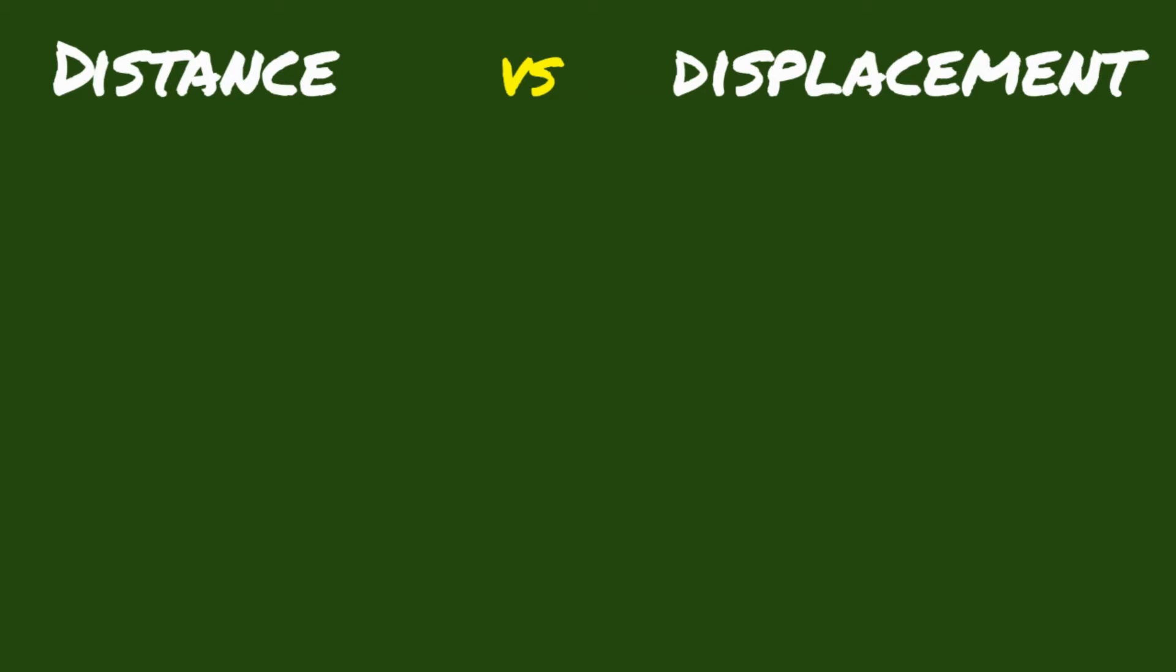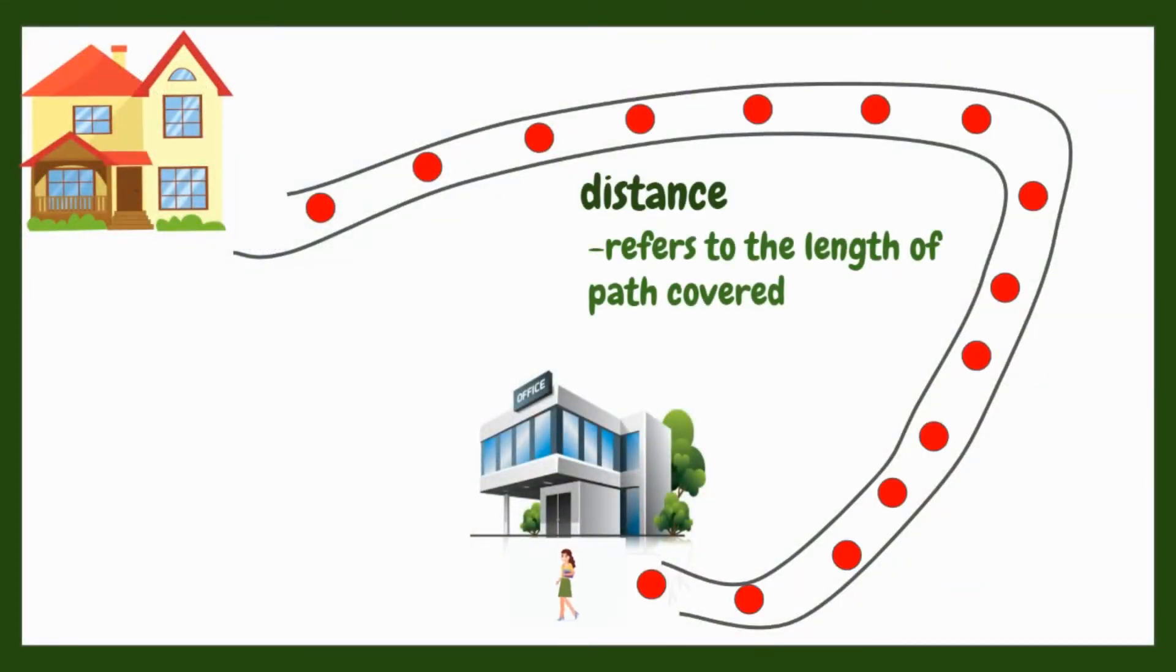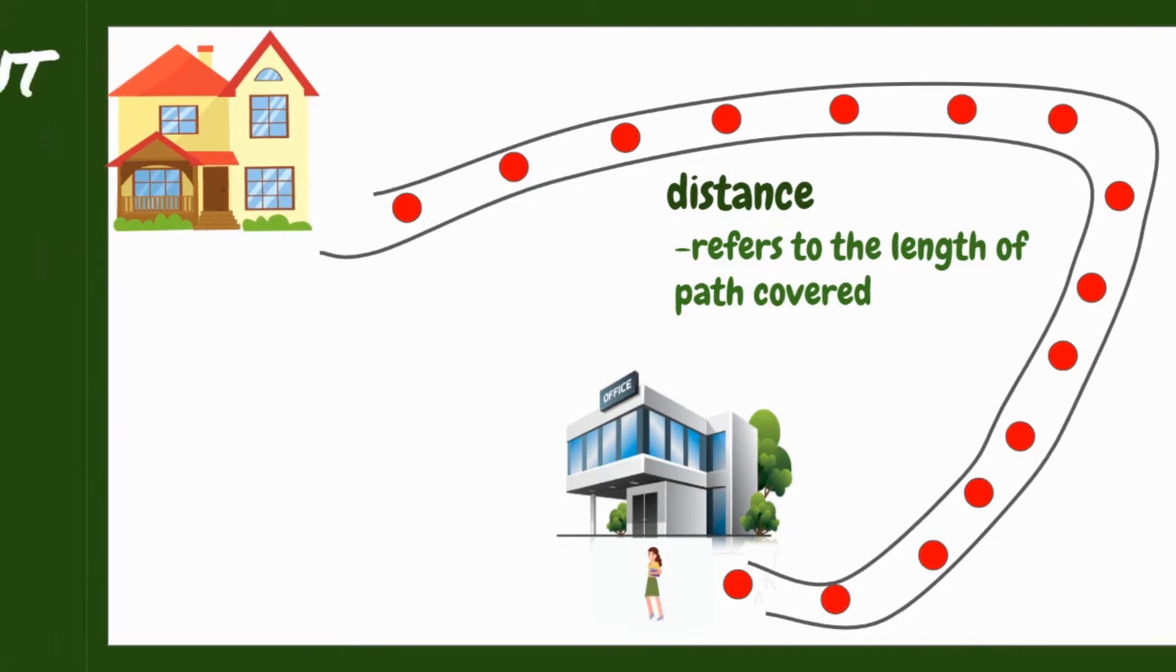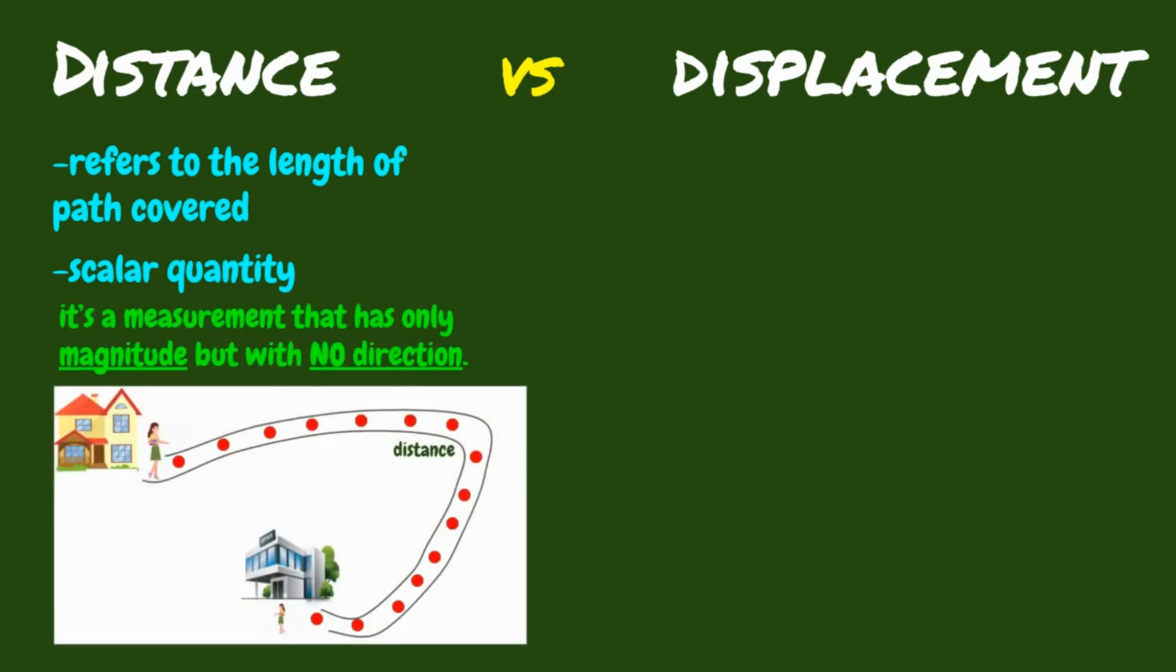Distance refers to the length of path covered. Take a look at the illustration. If this is a person and she is going to her workplace, the entire path that she traveled is the distance she covered. Distance is said to be a scalar quantity. That means it's a measurement that has only magnitude but with no direction. For example, this person traveled 30 meters.